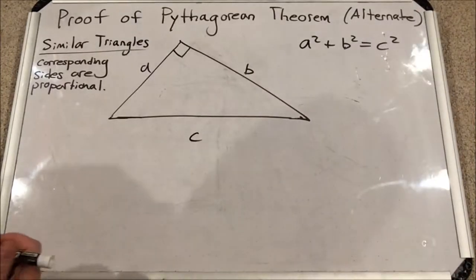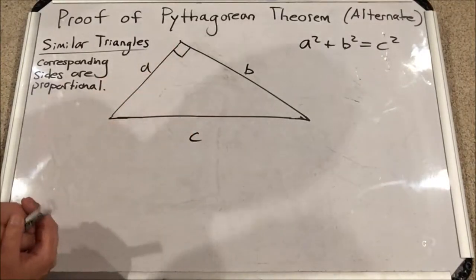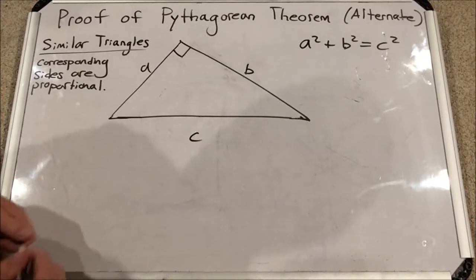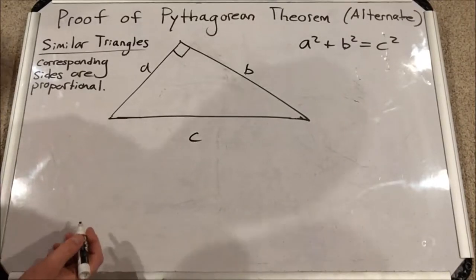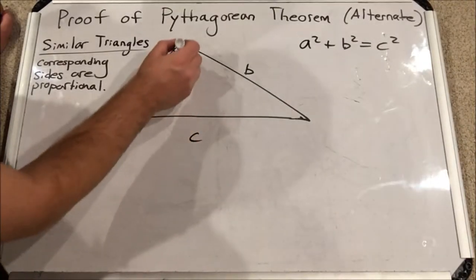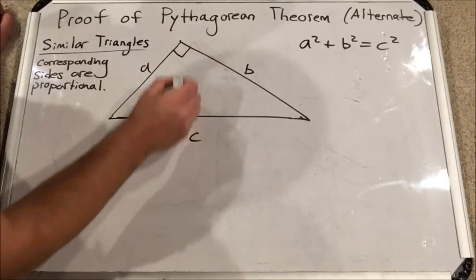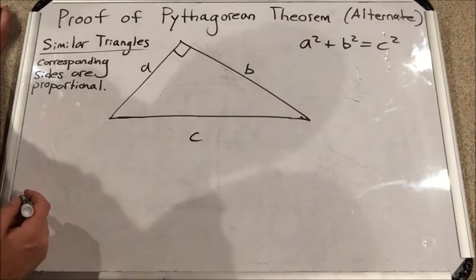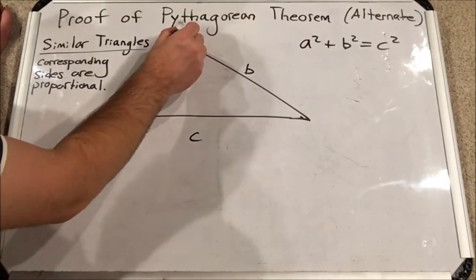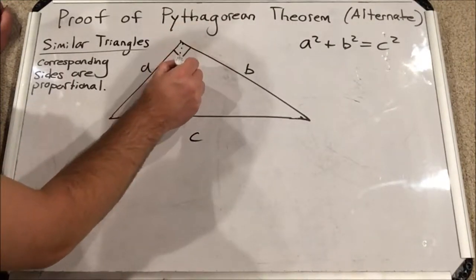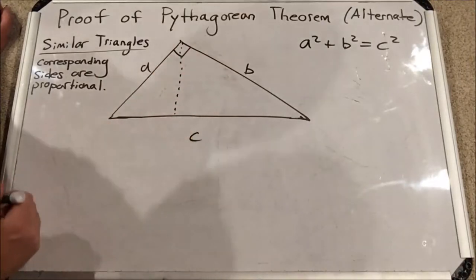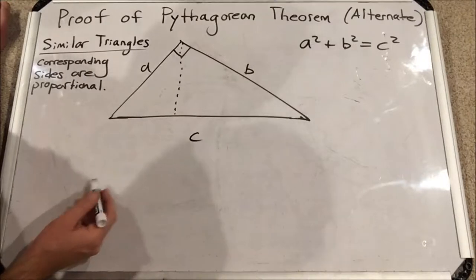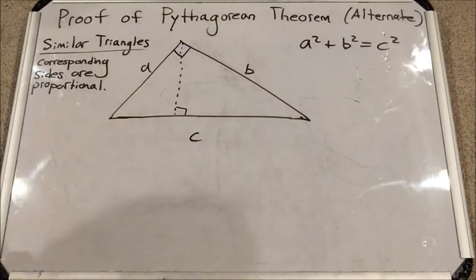Now this proof makes use of a right triangle specifically and I've labeled the sides as such A, B, and C. Now what you do for this triangle is you make the altitude from the hypotenuse. So I put the triangle on its side such that the hypotenuse is at the bottom and I make an altitude which is a line that is perpendicular to one of the sides and extends to the vertex of the opposite angle. So this is a right angle here as well.